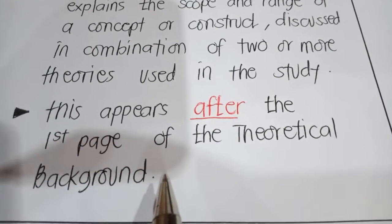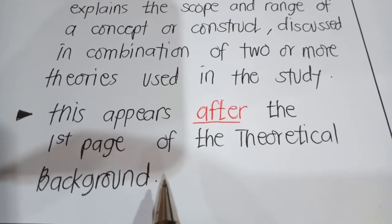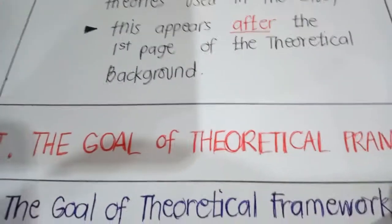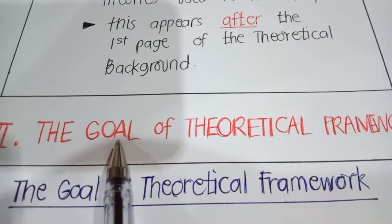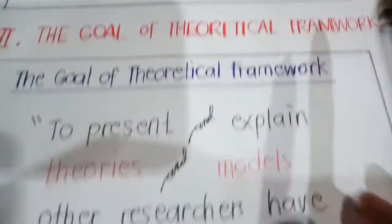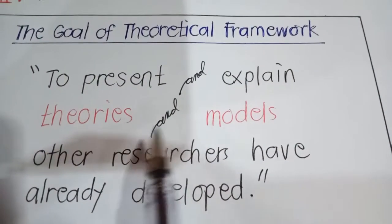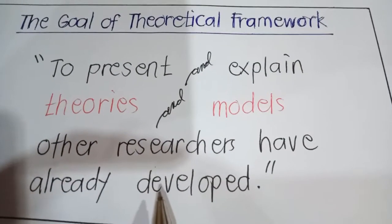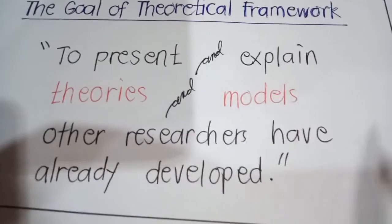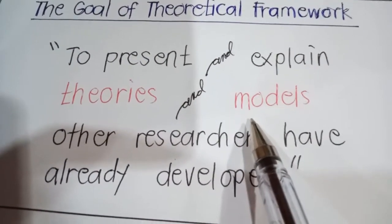That ends our first discussion on the definition of theory and theoretical framework. Let us now move on to our second key area — the goal of theoretical framework. The goal of a theoretical framework is to present and explain theories and models other researchers have already developed. There may be many different theories about your topic, so the theoretical framework also involves evaluating, comparing, and selecting the most relevant ones.